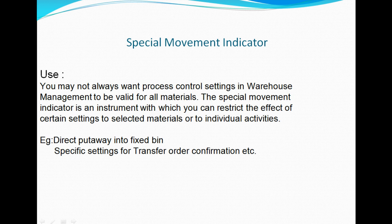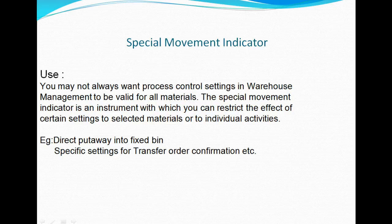So what is Special Movement Indicator and when do we actually use it? You may not always want the process control settings in warehouse management to be valid for all materials. The Special Movement Indicator is an instrument with which you can restrict the effect of certain settings to selected materials or to individual activities. For example, during a goods receipt, you may want a certain material to be directly put away in a fixed bin, or to influence certain processes for that particular material which are not applicable to the general material coming into the warehouse. You can use the Special Movement Indicator to help the system identify that this material is to be treated differently.